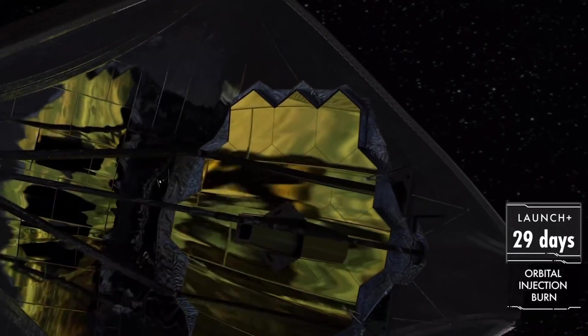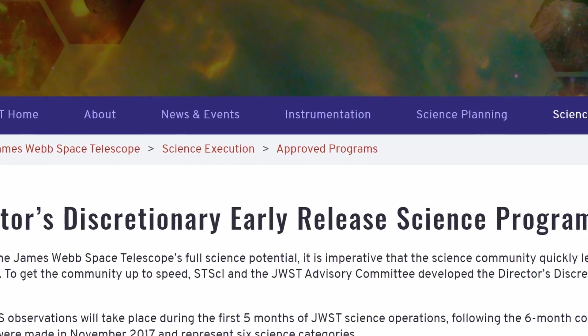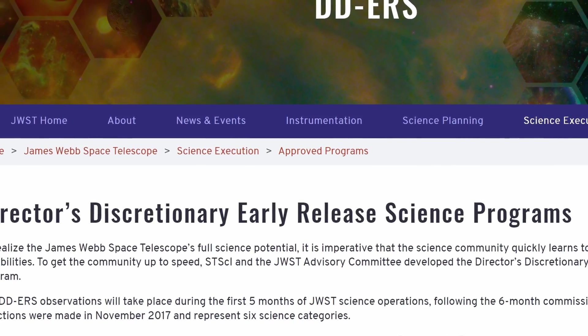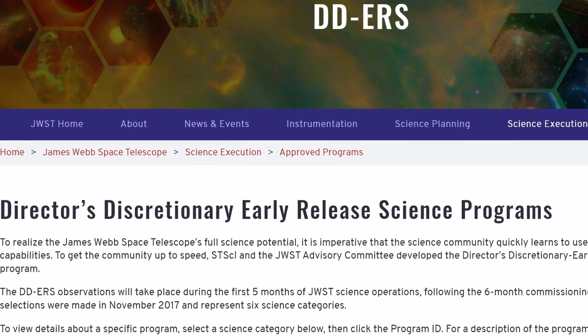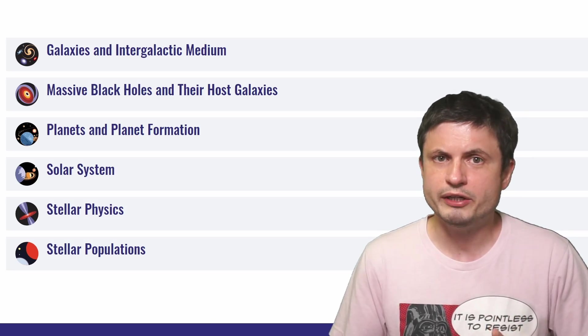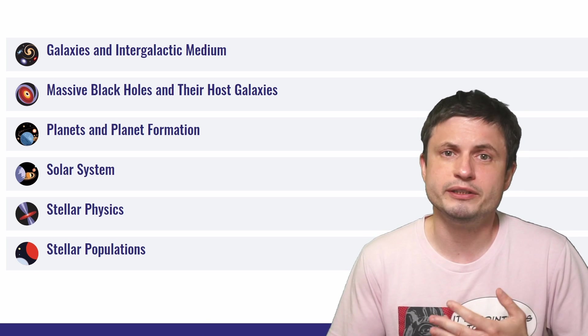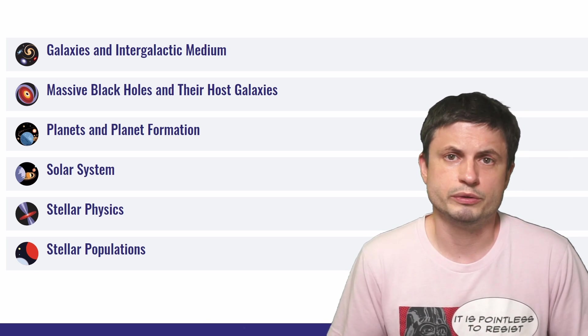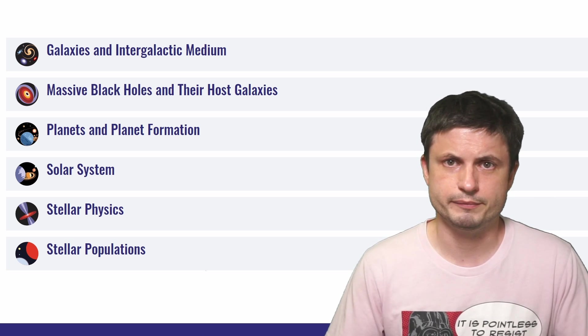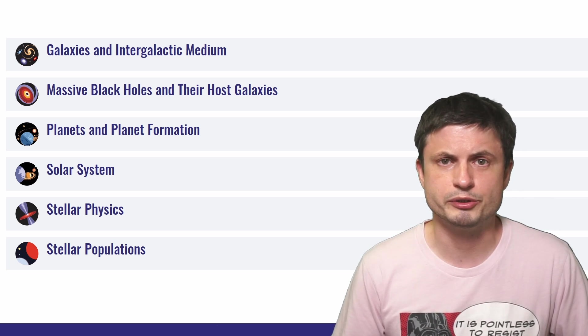But the most important part is going to start in the summer and is known as DDERS. Directors discretionally early release science programs. This is approximately 460 hours of observation that was awarded to 13 different programs in order to kickstart the science program for James Webb. You can actually learn more about this in the description below.